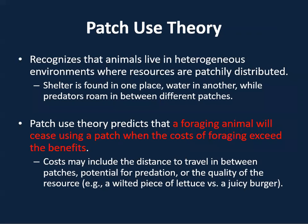We also have another theory: the patch use theory. We can recognize that animals live in heterogeneous environments where resources are found in patches and are patchily distributed — shelter is found in one place, water in another, while predators roam in between different patches.